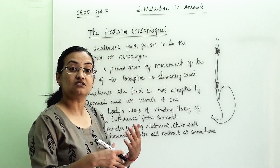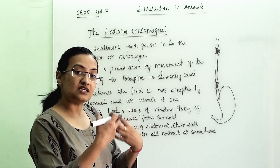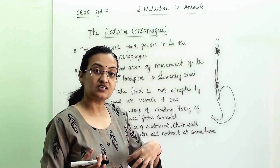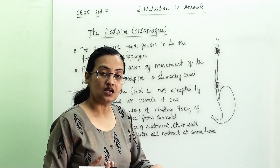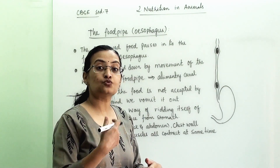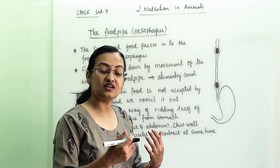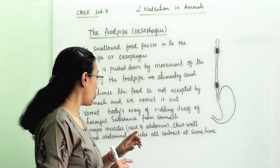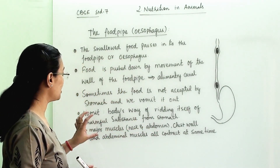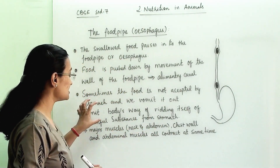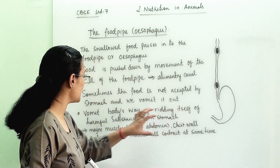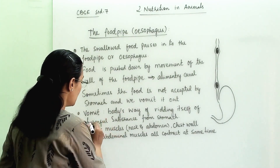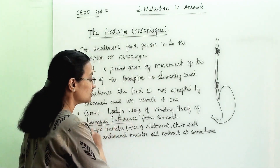Vomiting is the reverse process. While eating, we take food in part by part, but in vomiting the reverse process happens and food comes out. This is the body's way of ridding itself of harmful substances from the stomach.